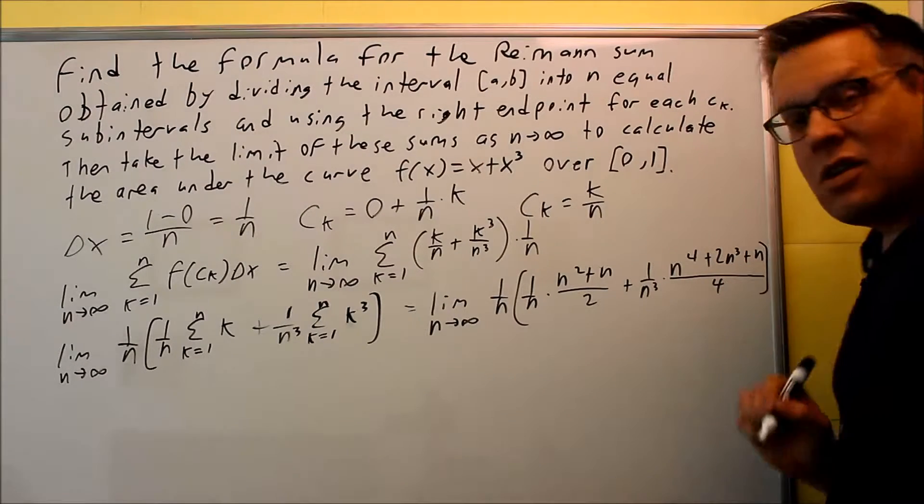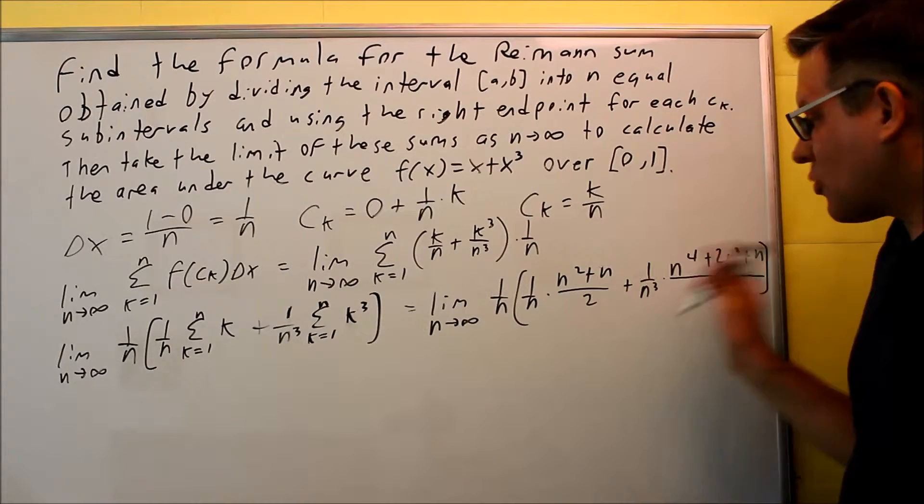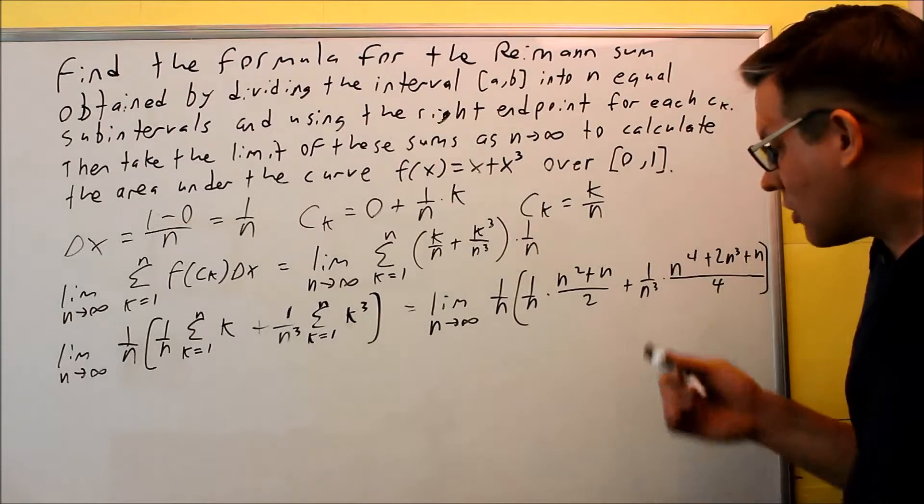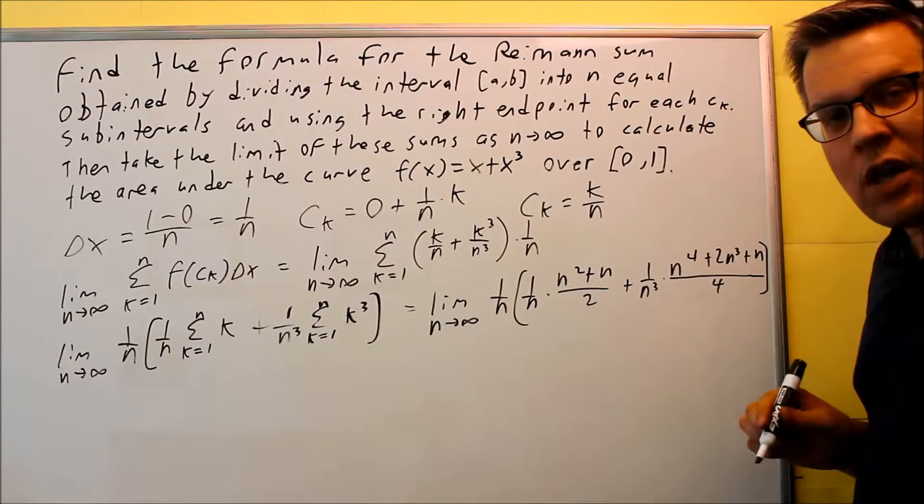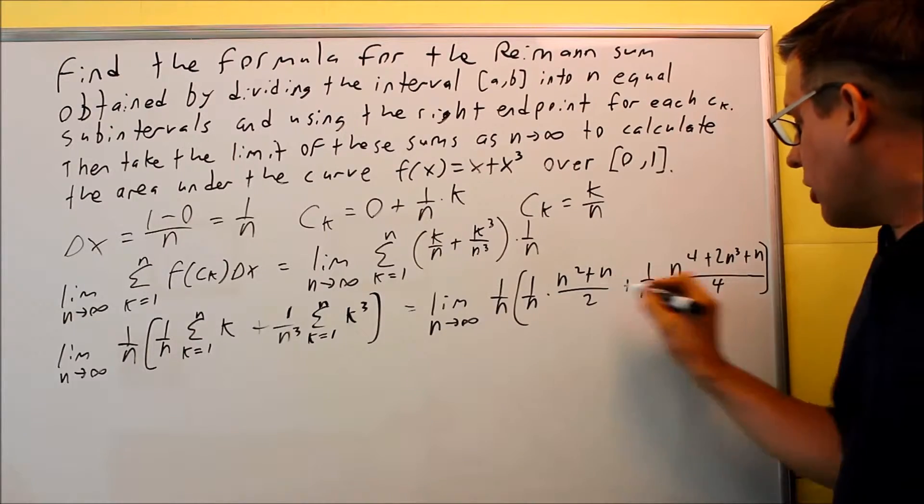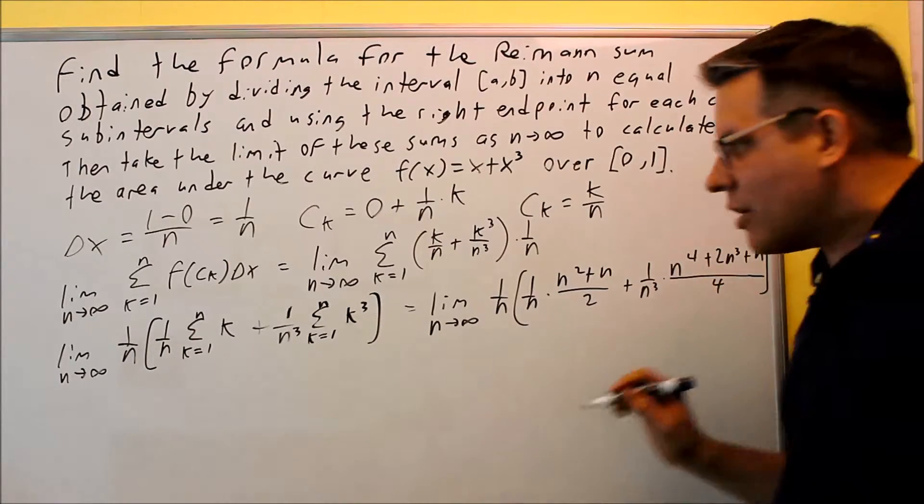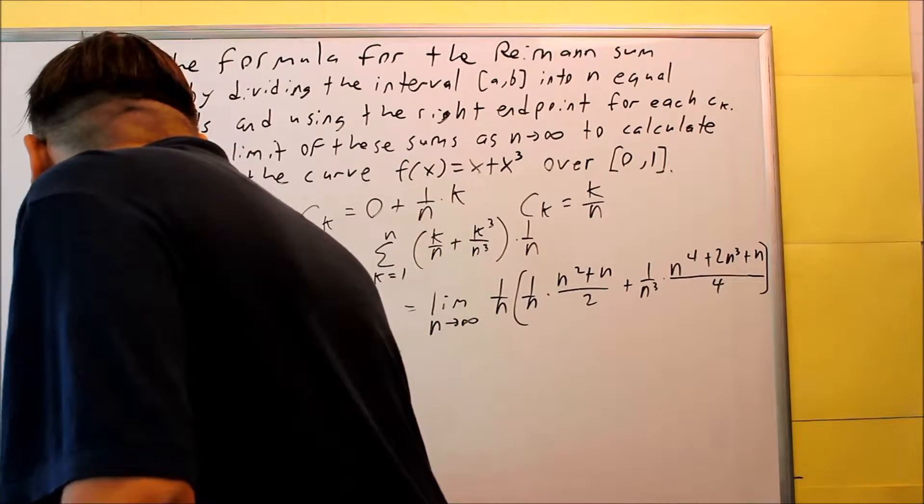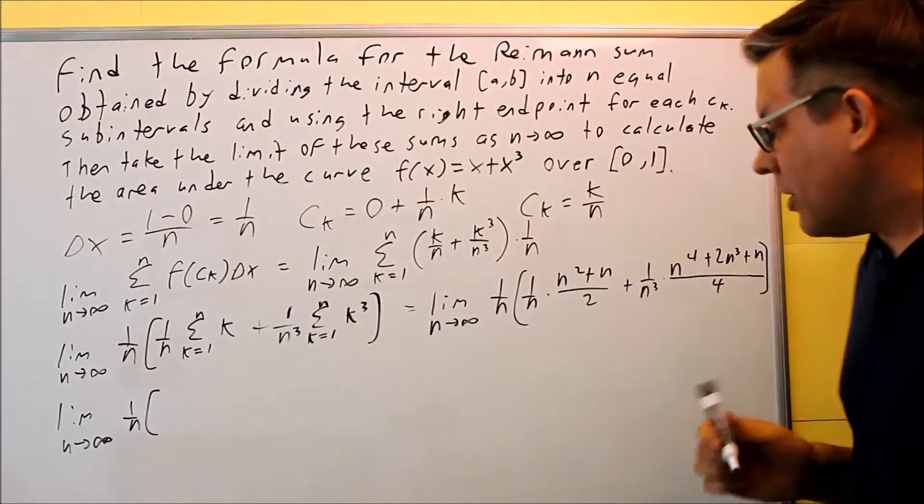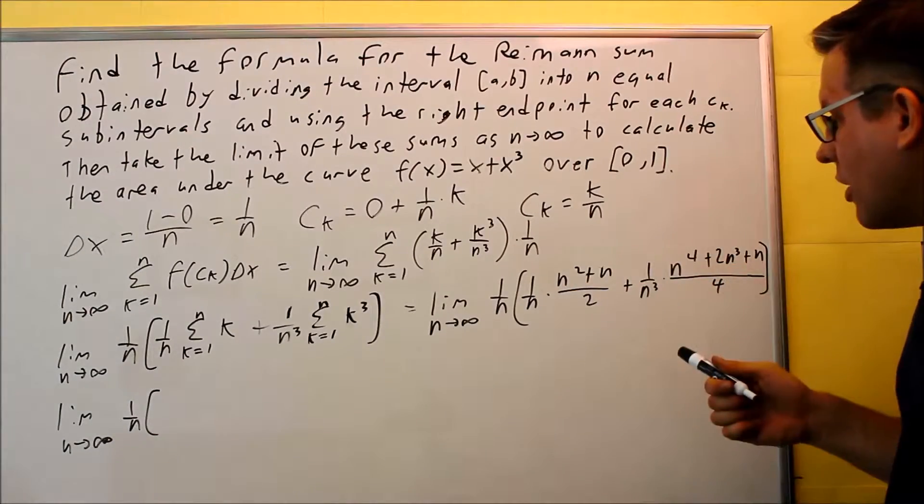So notice that I'm using the expanded version here because, again, you want to split all this up as much as you can and then take limits of each term separately. So that's why I'm writing out the expanded version in that case. So I'm going to do some simplifying on the inside of here. So that's my next step. I'm still going to have the 1 over n on the outside. I'm not going to do anything with that yet. But I'm going to combine what I have inside here.